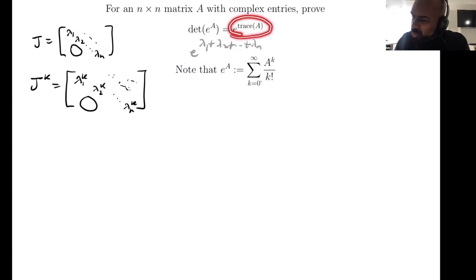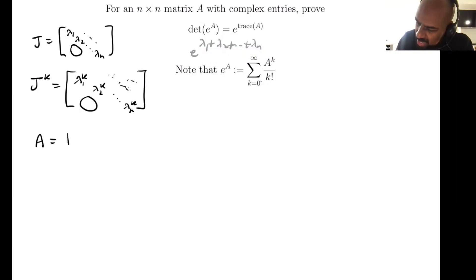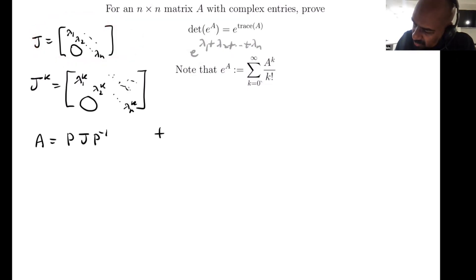We need to show that e^(sum of eigenvalues) equals e^(trace A), i.e., that the trace of A equals the sum of the eigenvalues. Going back to our observation, A = P·J·P⁻¹, where P is an invertible matrix and J is the Jordan canonical form, so the trace of A equals the trace of P·J·P⁻¹.